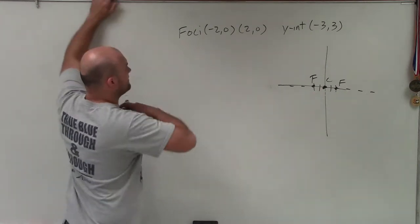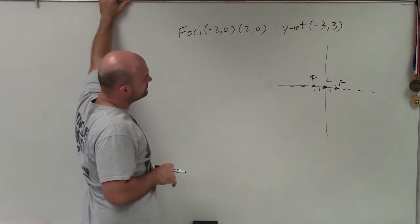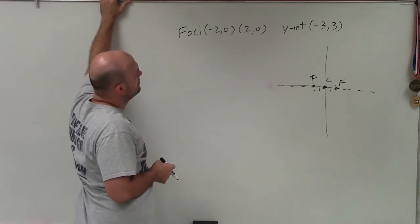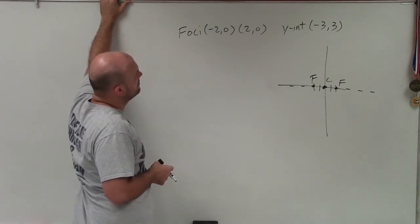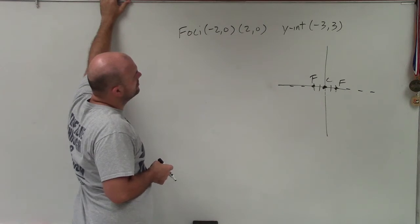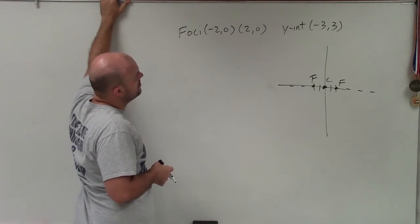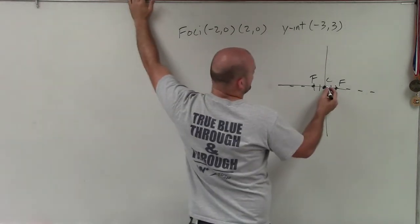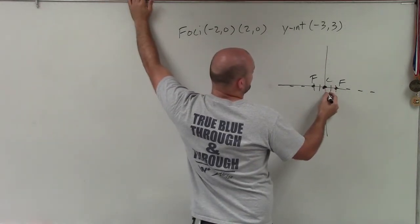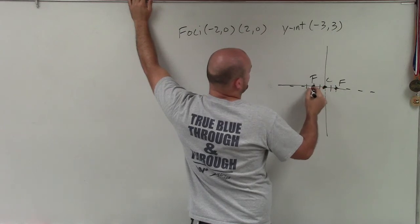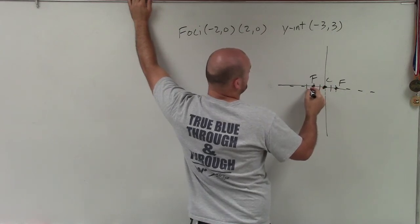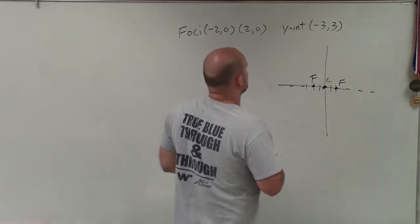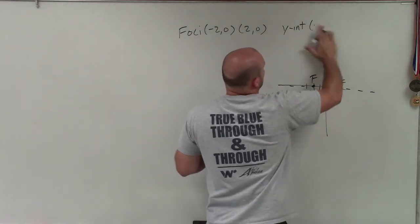Now, since we have a horizontal axis, let's plot the y-intercepts. Negative 1, 2, 3, positive 3. Oh, the y-intercept is at 0. Oh, I'm sorry, I wrote that wrong.